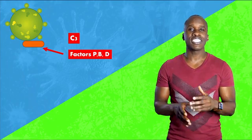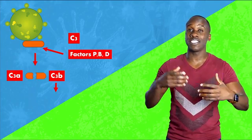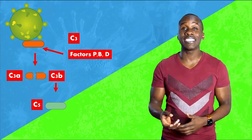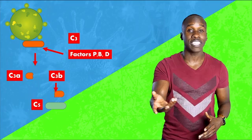Once it binds to the pathogen, it's gonna interact with other proteins, factor P, B, and D. That interaction causes C3 to split into C3A and C3B, and from there, the rest of the pathway continues, just as we discussed earlier.